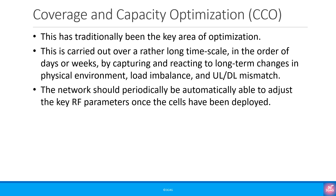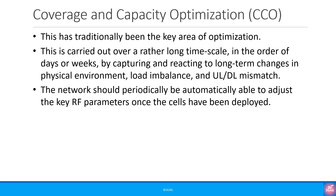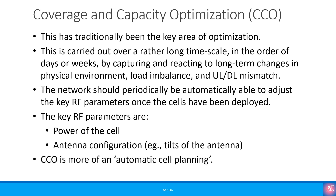The network should periodically and automatically be able to adjust the key RF parameters once the cells have been deployed. The key RF parameters are the power of the cell and the antenna configuration, like the tilts of the antenna. CCO is more of an automatic cell planning.